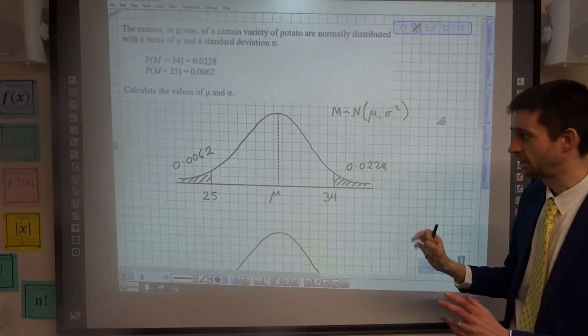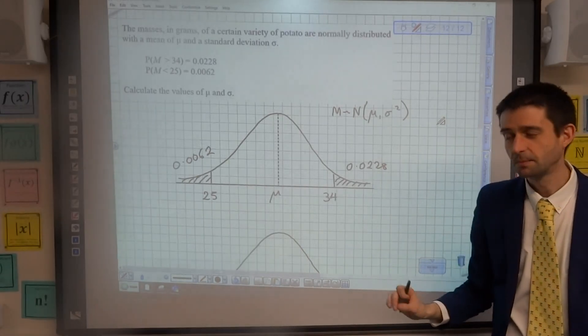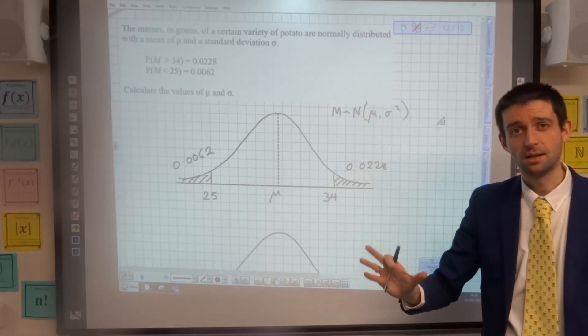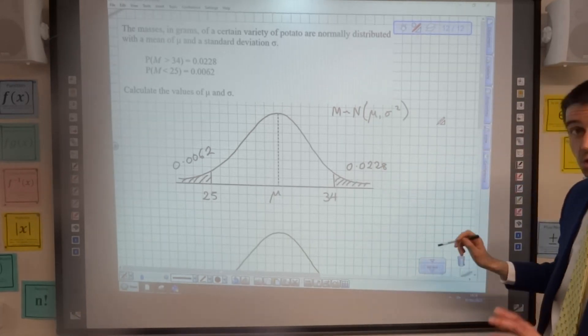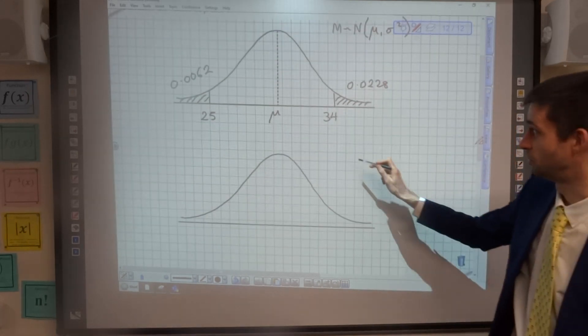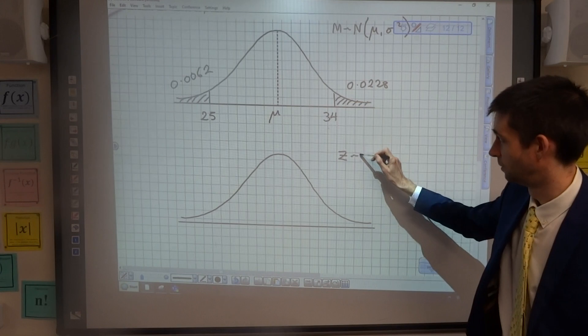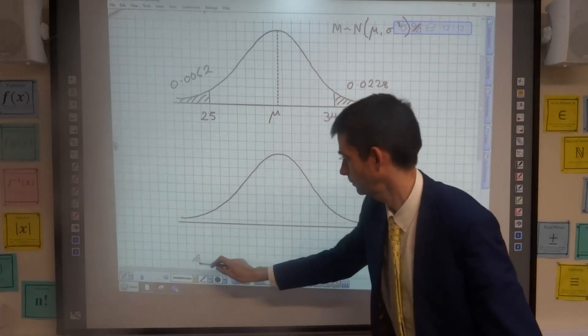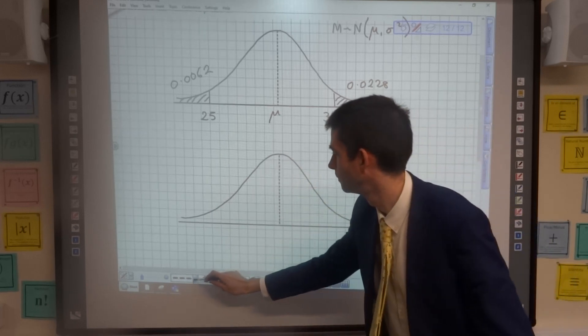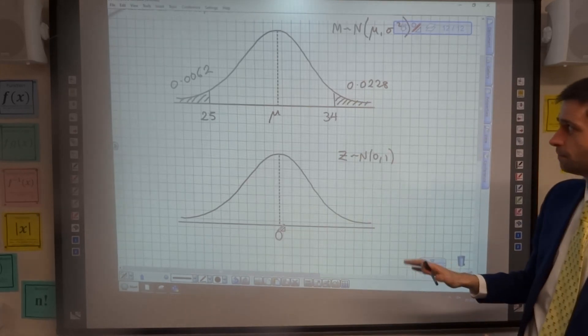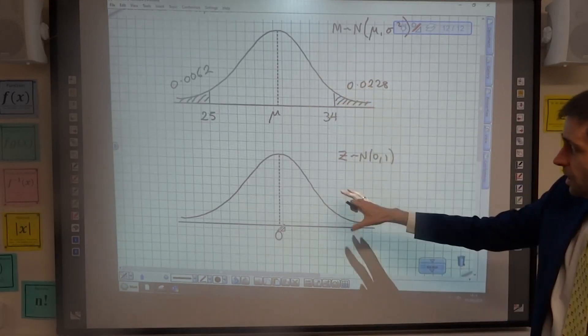I've been given two values with their associated probabilities, which means I can form two equations to solve for the mean and the standard deviation. But to do that, I'm going to have to go to the standardized normal distribution—z follows N(0,1).